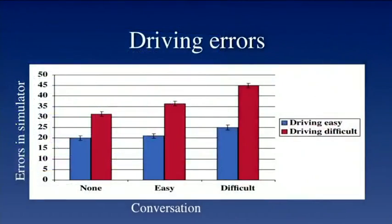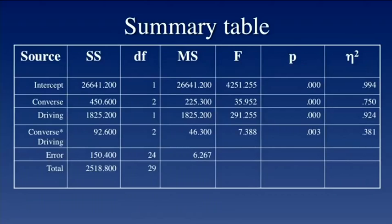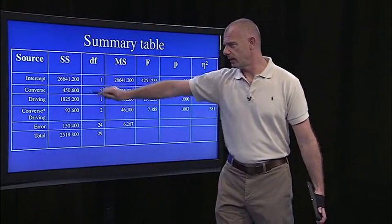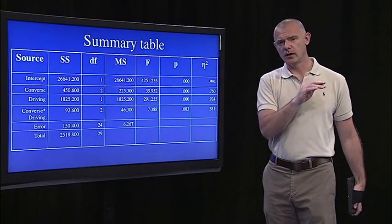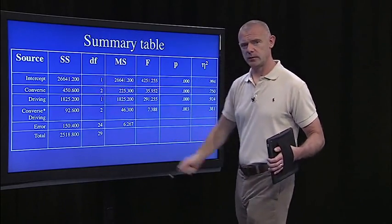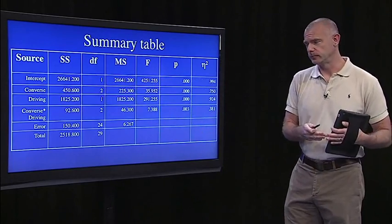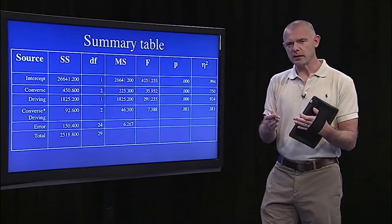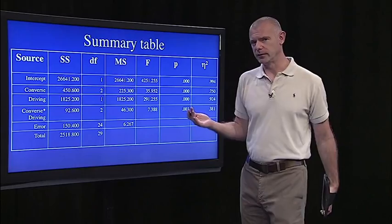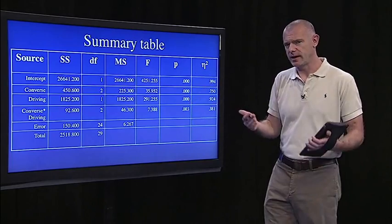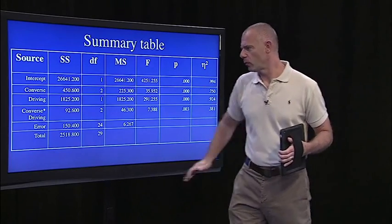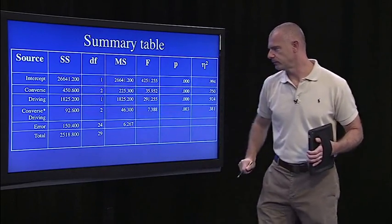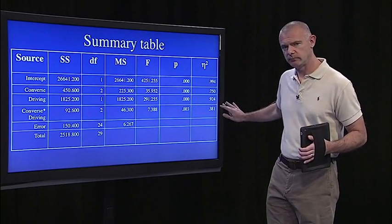Here again are the results in a graph. It looks like there are main effects of driving difficulty, conversation difficulty, and an interaction. Looking at the data summarized in an ANOVA summary table, the sources of sums of squares include the intercept - which just tests whether the overall mean is significantly different from zero, not really important here. What's more interesting are the main effect of conversation, main effect of driving, and the interaction. They're all significant, as we predicted from the graph.